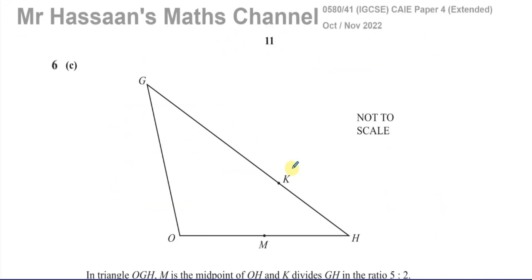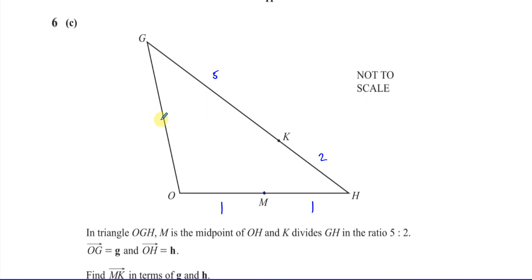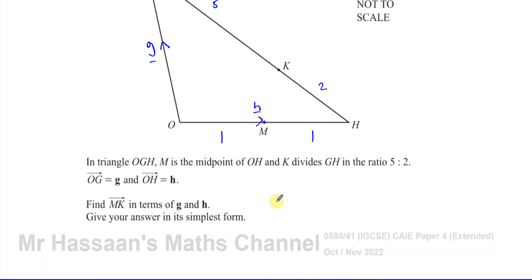Now we're going to go to part C, which was actually the question that was asked by the student. It says in triangle OGH, M is the midpoint of OH and K divides GH in the ratio 5 to 2. So M is the midpoint of OH. So that means, you know, if this length and this length will be the same. And K divides GH in the ratio 5 to 2. So K divides GH in the ratio. This is 5 parts and this is 2 parts.